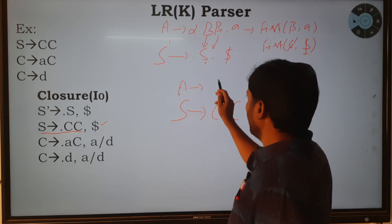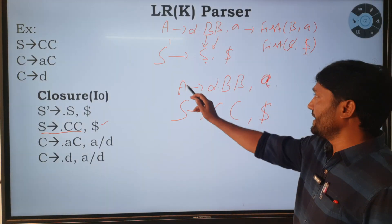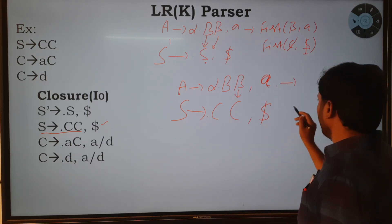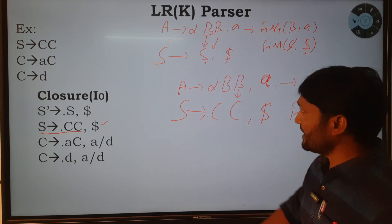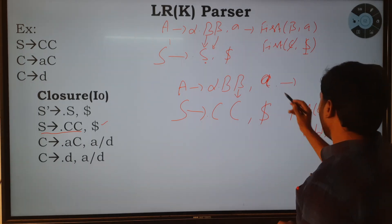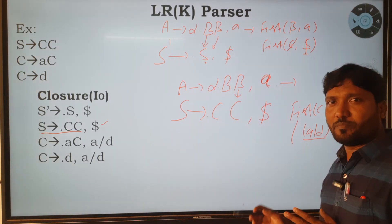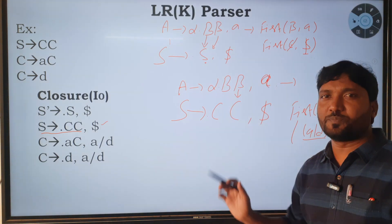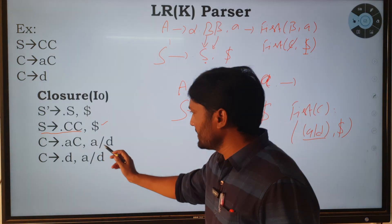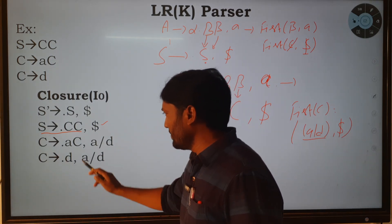Using the formula: first(β, a) — here β is C and a is dollar. First of C equals {a, d}. Whenever terminal symbols appear in first(β), those symbols are considered the lookahead symbols for the added production. Since there is no epsilon, the lookahead symbols are a or d. So C → •aC and C → •d both get lookahead symbols a or d.